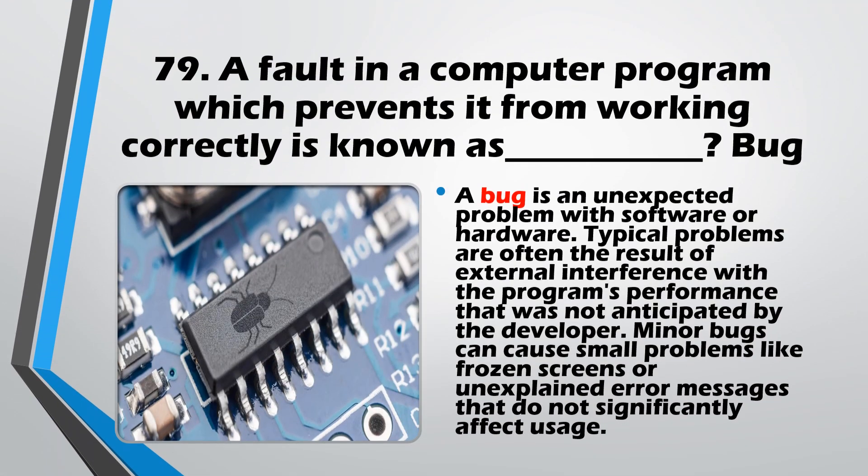Question No. 79: A fault in a computer program which prevents it from working correctly is known as a Bug. A bug is a small error, and the alternative term for it is a Glitch.